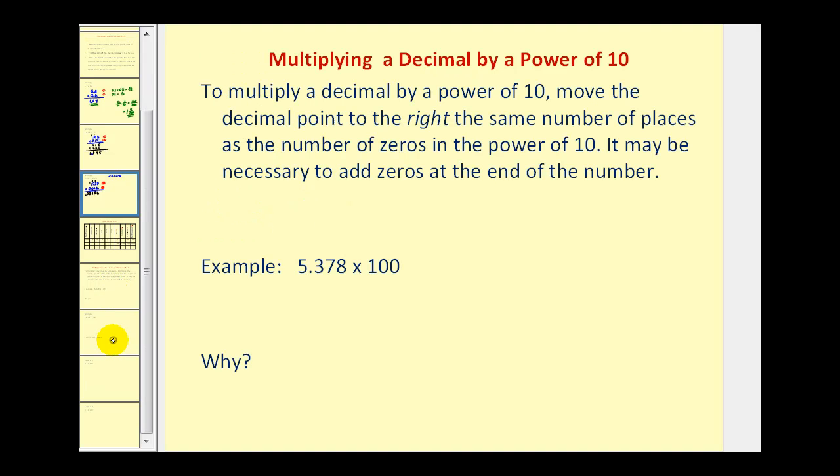I want to take a moment now and talk about multiplying a decimal by a power of 10. This could be done very quickly and easily since our number system is based on powers of ten. To multiply a decimal by a power of ten, we move the decimal point to the right,